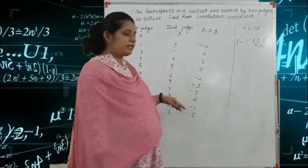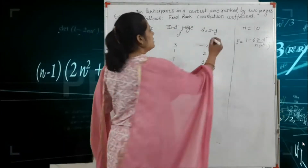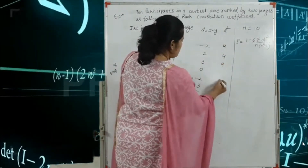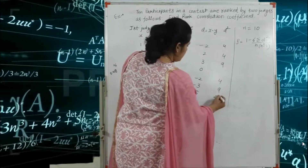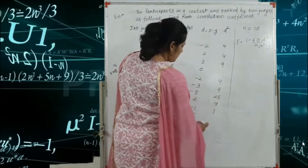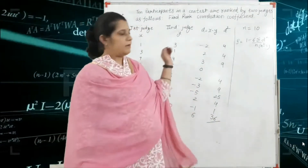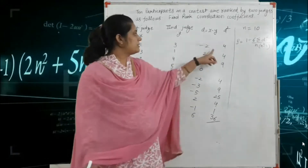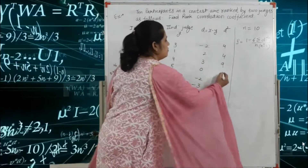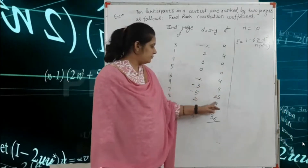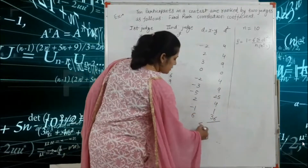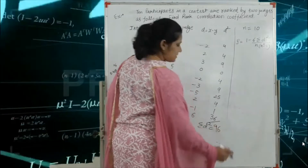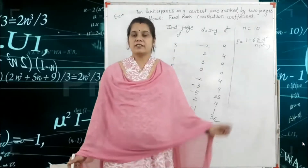After that we find d². The d column values are: minus 2, 2, 3, 0, minus 2, minus 3, minus 5, plus 2, minus 1, and 6. The corresponding d² values are: 4, 4, 9, 0, 4, 9, 25, 4, 1, and 36. We then find the summation of d². Summing all these values we get summation d² = 96.